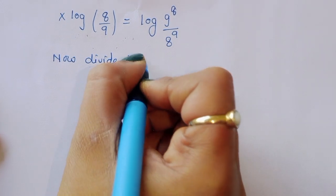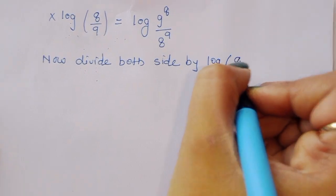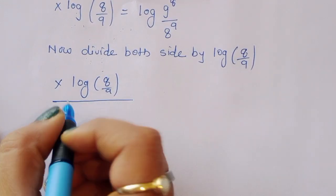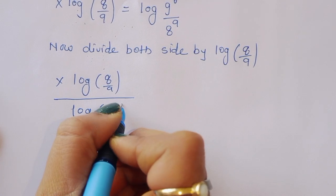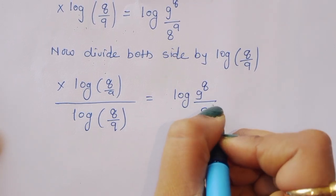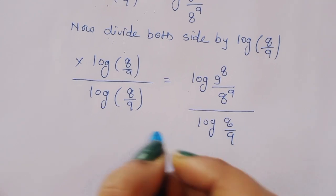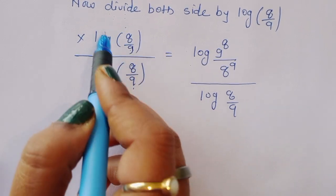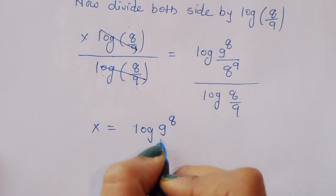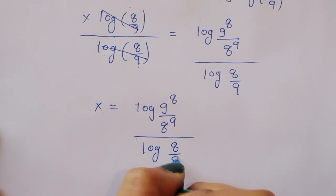Dividing both sides by log of (8/9), the log of (8/9) terms cancel on the left side. So x is equal to log of (9 power 8 divided by 8 power 9) divided by log of (8/9).